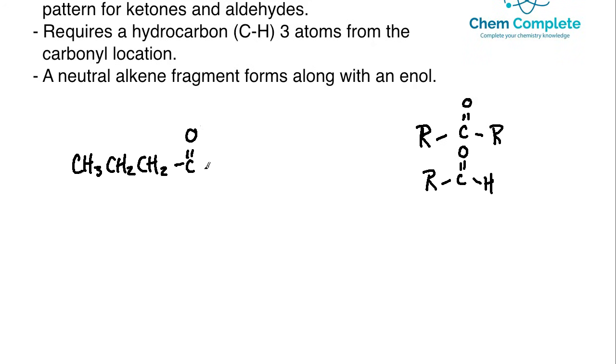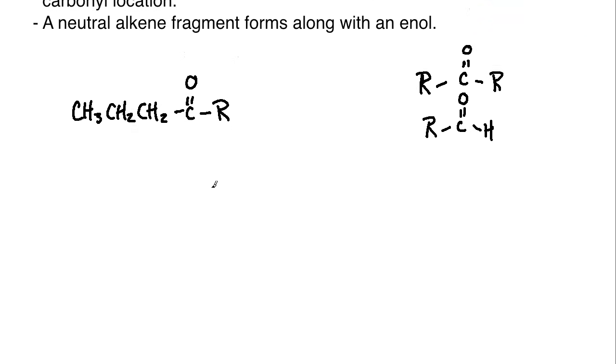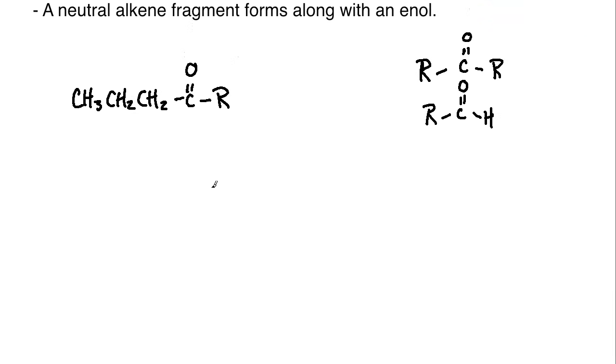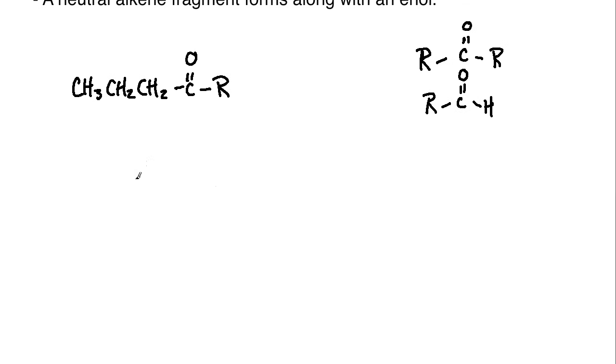And then we'll just finish it off with an R group here, whatever we want for the other side of the ketone. Now when we get ready to take a look at the way this actually occurs, I'm going to draw it a little bit different with some bond angles that'll help us understand what's going on here.